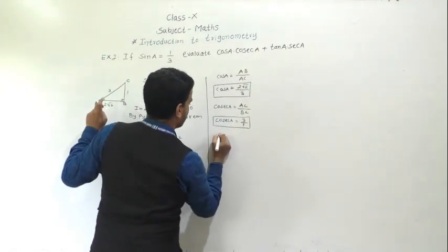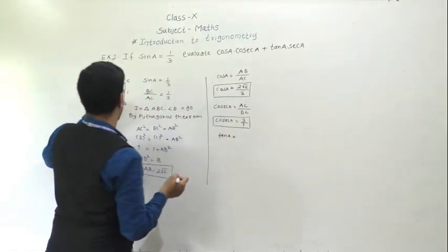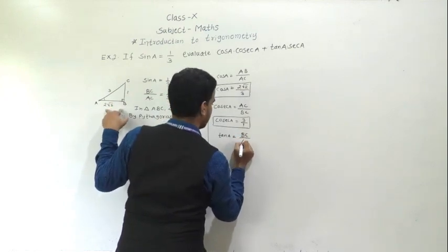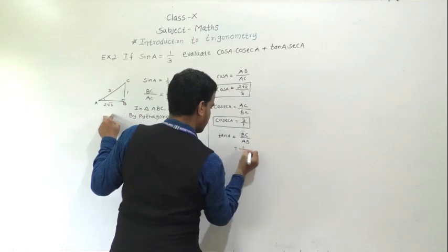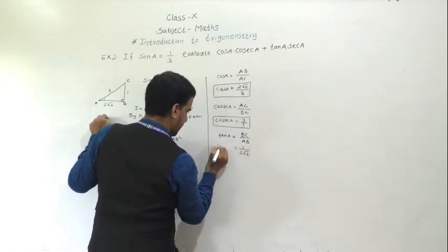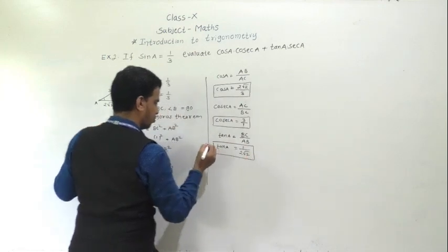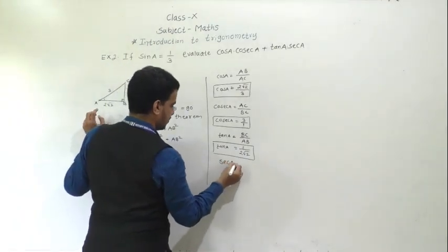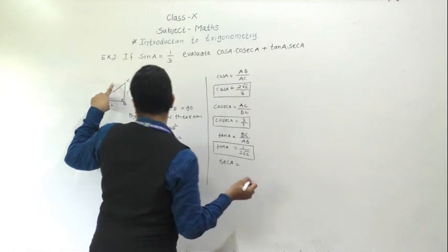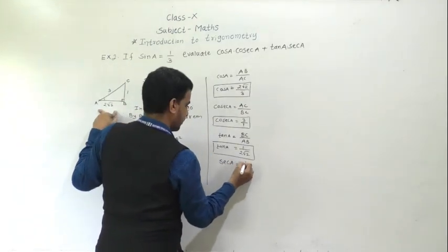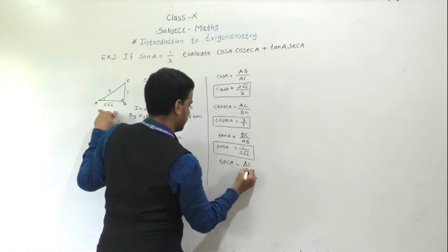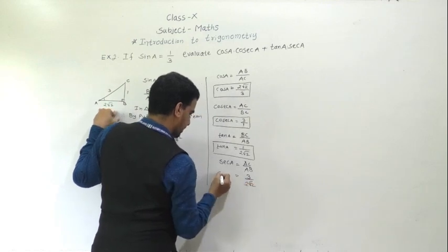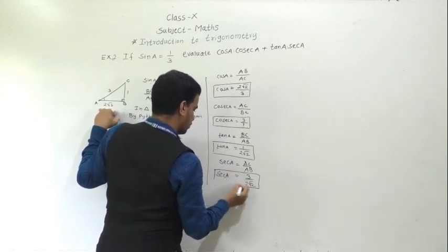Tan A equals opposite side by adjacent side, so BC upon AB equals 1 / (2√2). Sec A equals hypotenuse by adjacent side, that is AC by AB, so 3 / (2√2).